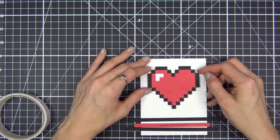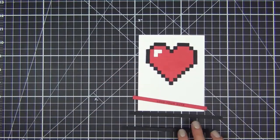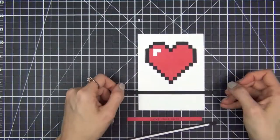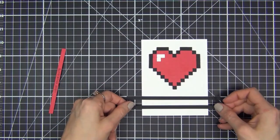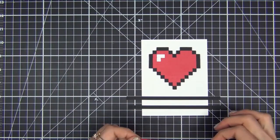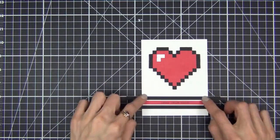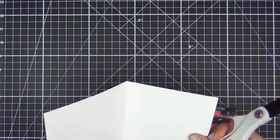Okay, using double sided tape I adhere the heart to an A2 size folding note card. And then I stick the strips down using some very thin double sided tape. And of course the final step is to trim the excess.